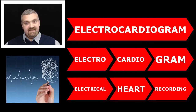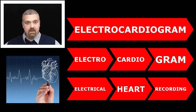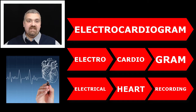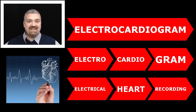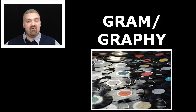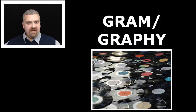Another example is the EKG or ECG, which is the electrocardiogram. Electro means electrical activity, cardio means heart, gram means a recording. So the ECG electrocardiogram is measuring and recording the electrical activity of your heart. It's often called an EKG because it was created in Germany, paying homage to that fact. So gram or graphe means something written — a record of some activity.